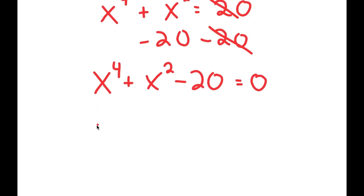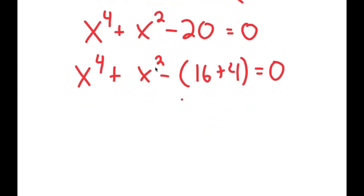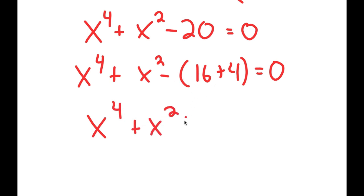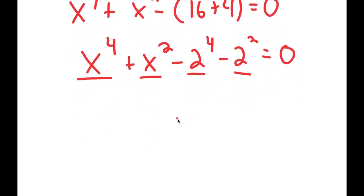To solve this, I want to rewrite this as x to the power of 4 plus x squared minus 16 plus 4. I rewrote 20 as 16 plus 4, and the reason I did this is because negative 16 is the same thing as negative 2 to the power of 4, and negative 4 is the same thing as negative 2 squared. So now I have something in the power of 4 and something in the power of 2, and they're both the same.